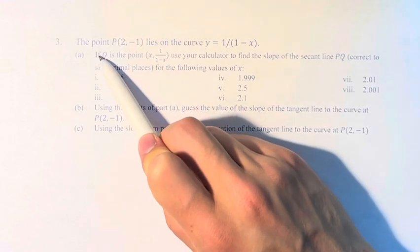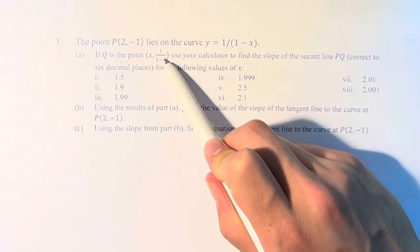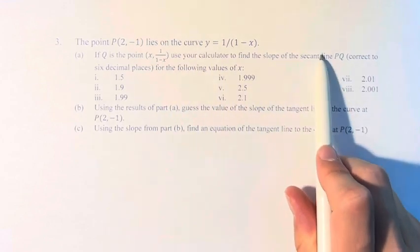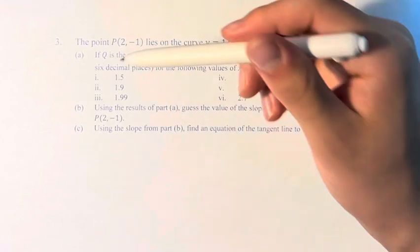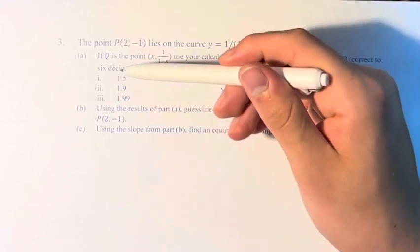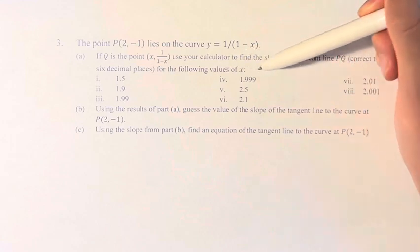We're asked: if Q is the point (x, 1/(1-x)), use your calculator to find the slope of the secant line PQ, so the line that goes between these two points, correct to the first six decimal places for the following values of x.